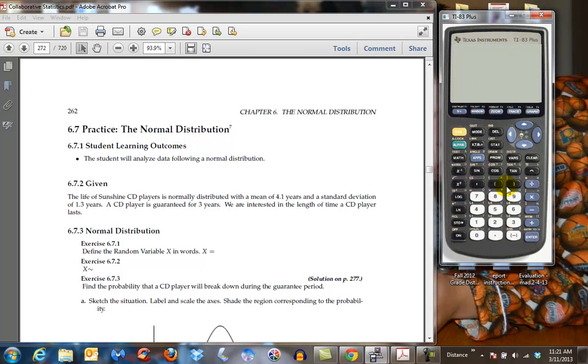We need to go to the distribution, which is second distribution, and we're going to deal with normal CDF for the first one here because it says we have a CD player, life expectancy average of 4.1 years, standard deviation of 1.3 years, and there's a guarantee on it for three years. And they want to know, after all this other stuff that they've put in there, what is the probability that it will break down within the three-year period?